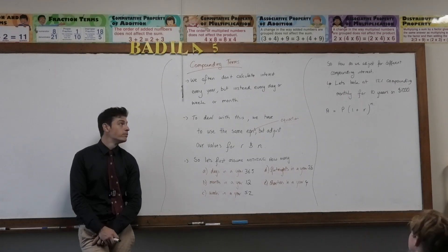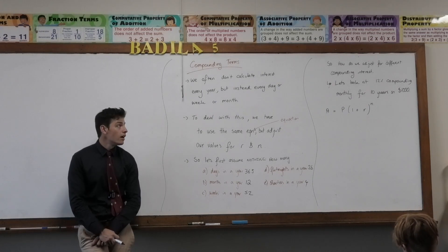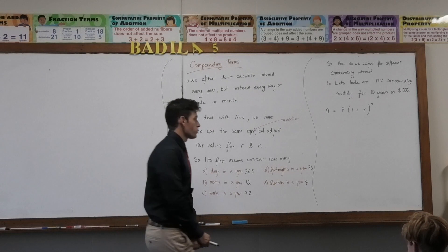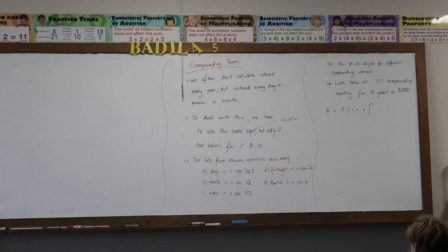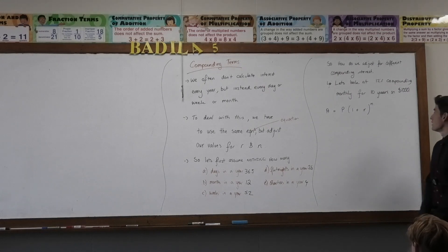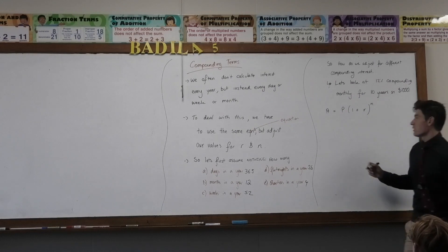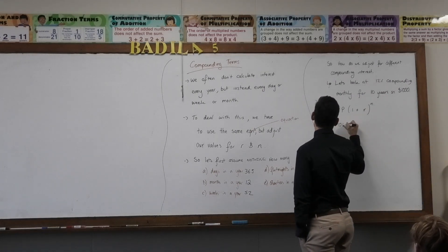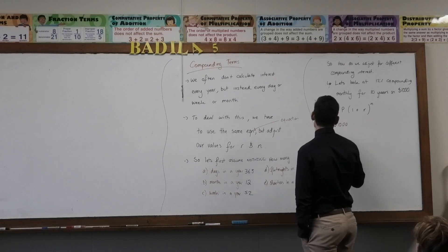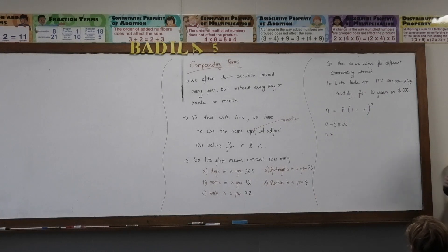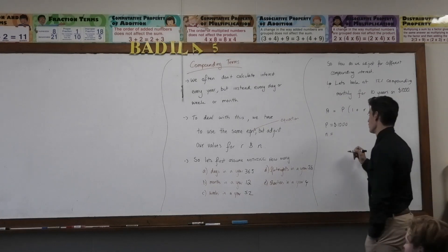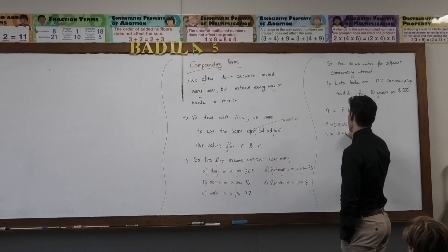So how do we adjust the different compounding terms? The best way I think is to look at an example. So we've got 12% compounding monthly, 10 years at $1,000. So this is our principal. We're still investing. P is still equal to $1,000. The number of terms, let's start with that. How many months are in that period of time? 120. 10 years. So 10 times 12, which equals 120 months, correct? Yes.